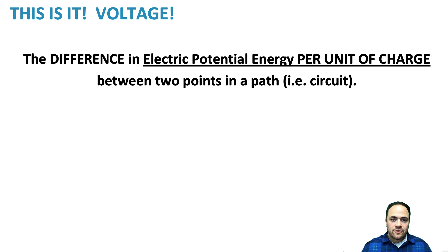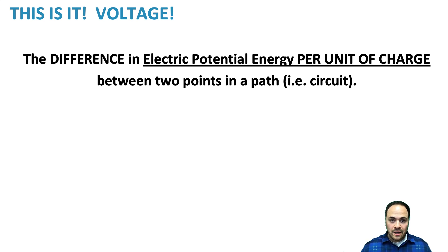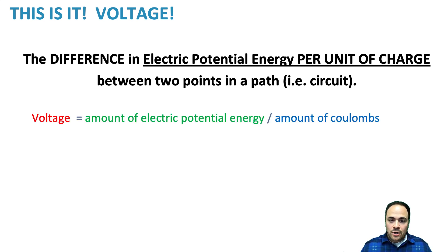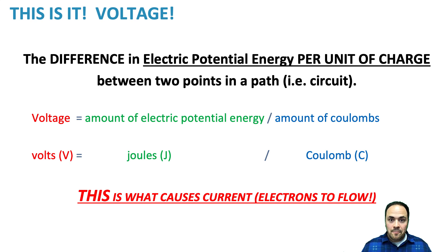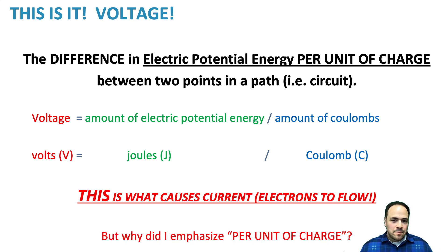No matter where we put the ramps, all that matters is the difference between the start and end of the path. That's voltage. Voltage is the difference in electric potential energy per unit of charge between two points in a path — usually a circuit. Just like the balls needed more potential energy at the top than the bottom, electrons have more potential energy at the start of a circuit, causing them to move through it. Voltage is represented by an uppercase V, and its unit is joules per coulomb.